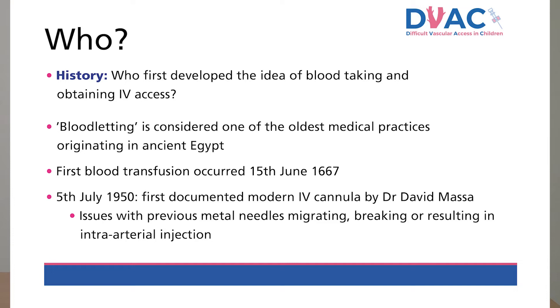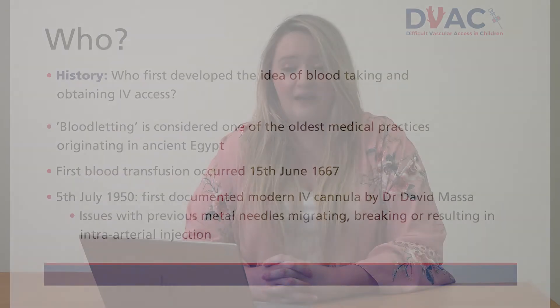In fact, the first successfully documented blood transfusion took place in 1667, and that was between two dogs. It wasn't until 1950 that Dr Massa, an American anaesthetic trainee, developed the concept behind the modern IV cannula, which used plastic tubing placed into a vein over a metal needle stylet. This was developed due to complications from the previously used hollow metal needles, which were prone to infection, dislodgement and migration.